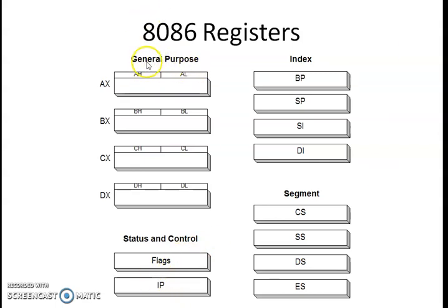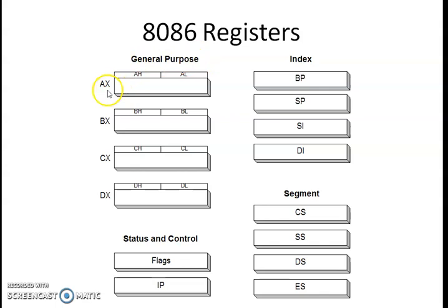By seeing the name you can understand the actual use of these registers. General purpose registers are used to store results or temporary results in the processor. Whenever you are executing any instruction or doing any computation — arithmetic, logical, or data transfer — there may be temporary results to store, and these registers are used for that. Accessing a register is very easy for the processor compared to accessing memory.